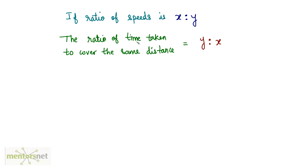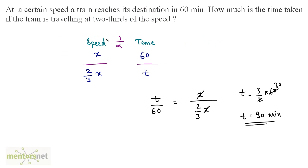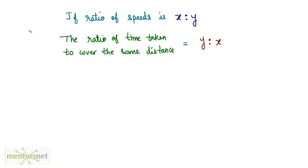This leads to an important conclusion: if the ratio of speeds is x to y, then the ratio of times taken to cover the same distance is the inverse — y to x. In this problem we had two speeds and one unknown time, and we found it using this inverse ratio relationship.